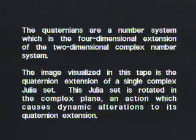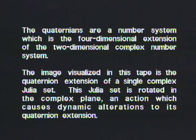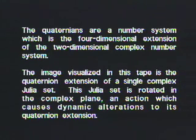The quaternions are a number system which is the four-dimensional extension of the two-dimensional complex number system. The image visualized in this tape is the quaternion extension of a single complex Julia set. The Julia set is rotated in the complex plane, an action which causes dynamic alterations to its quaternion extension.